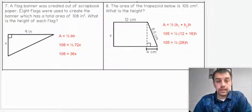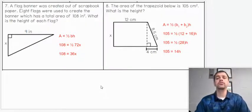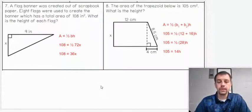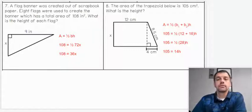So if we combine 12 and 16, we get 28. And half of 28 is 14. And then all you need to do is divide 105 by 14, and you should get a height of 7.5 centimeters.